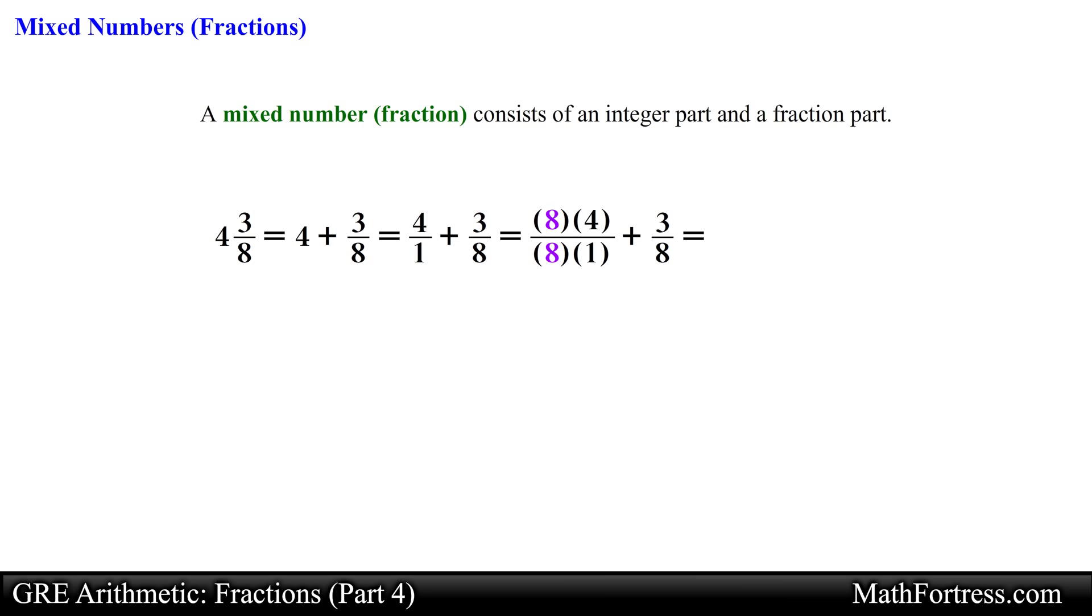This way both fractions will have a common denominator. Then it is just a matter of adding the numerators and keeping the common denominator. Doing that we obtain an equivalent fraction equal to 35 over 8. This type of fraction where the numerator is greater or equal to the denominator is referred to as an improper fraction.